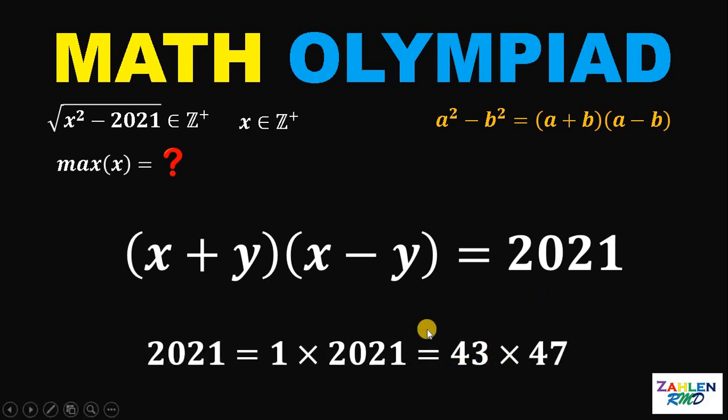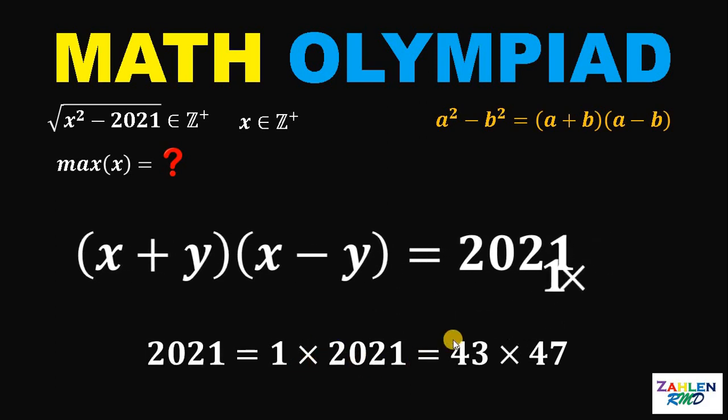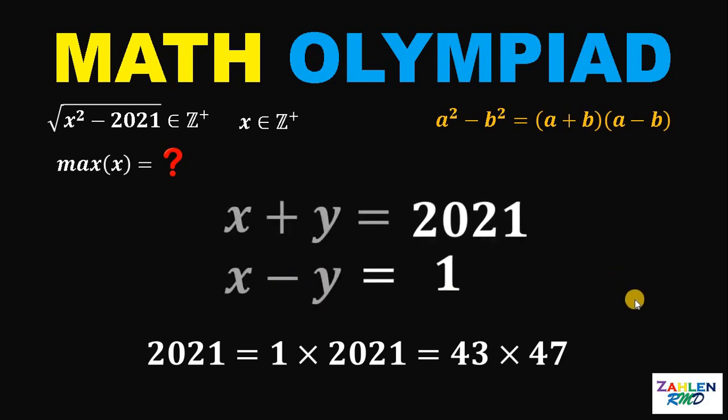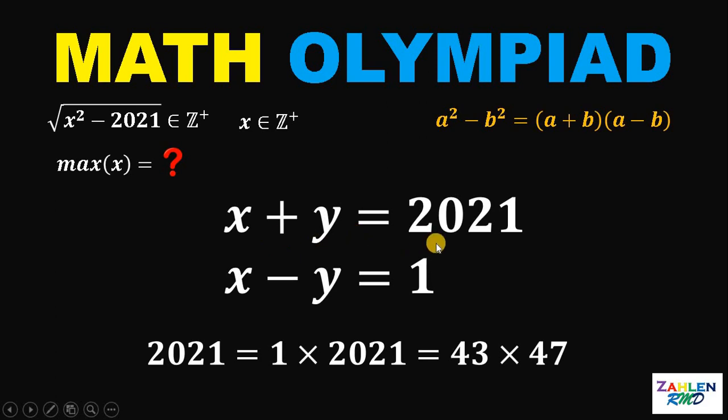Let's consider first the first factor 1 times 2021. Take note that we're dealing with positive integers only, therefore x plus y must be greater than x minus y. It follows that x plus y must be 2021 and x minus y must be 1. We have x plus y equals 2021 and x minus y equals 1.